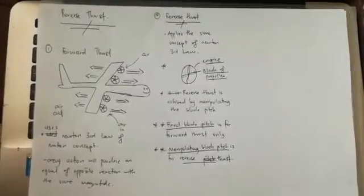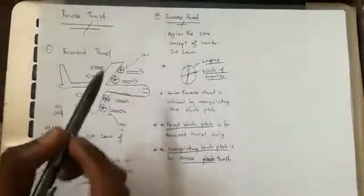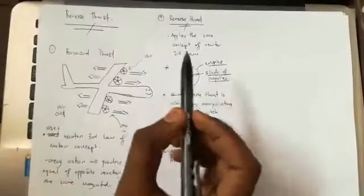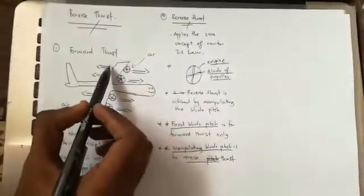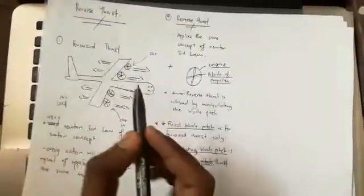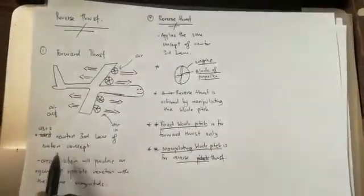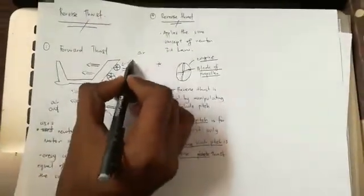Forward thrust is where the aircraft's engine sucks in air from the forward environment, releasing it back through the engine. It applies Newton's third law of motion, where the air goes in and comes out at the back, producing a resultant force that propels the aircraft in a forward motion.